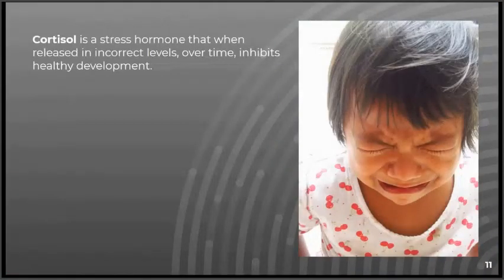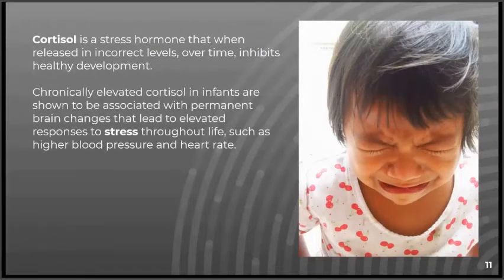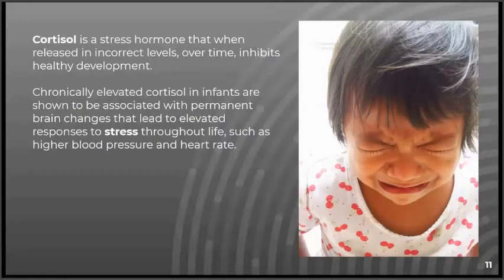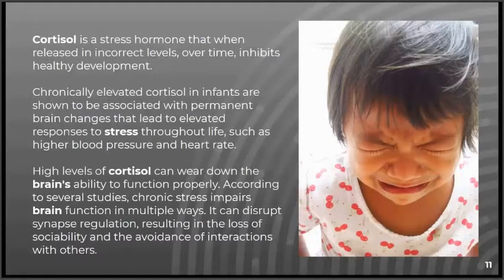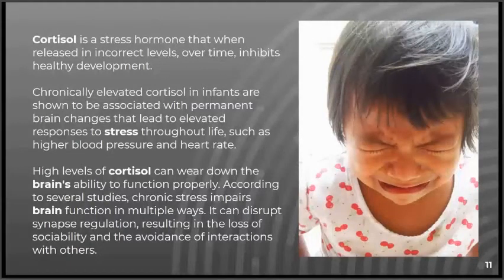Cortisol is a stress hormone that, when released in incorrect levels over time, inhibits healthy development. Chronically elevated cortisol in infants is associated with permanent brain changes that lead to elevated responses to stress throughout life, such as higher blood pressure and heart rate. Higher levels of cortisol can wear down the brain's ability to function properly. Chronic stress impairs brain function in multiple ways — it can disrupt synapse regulation, resulting in the loss of sociability and the avoidance of interactions with others.